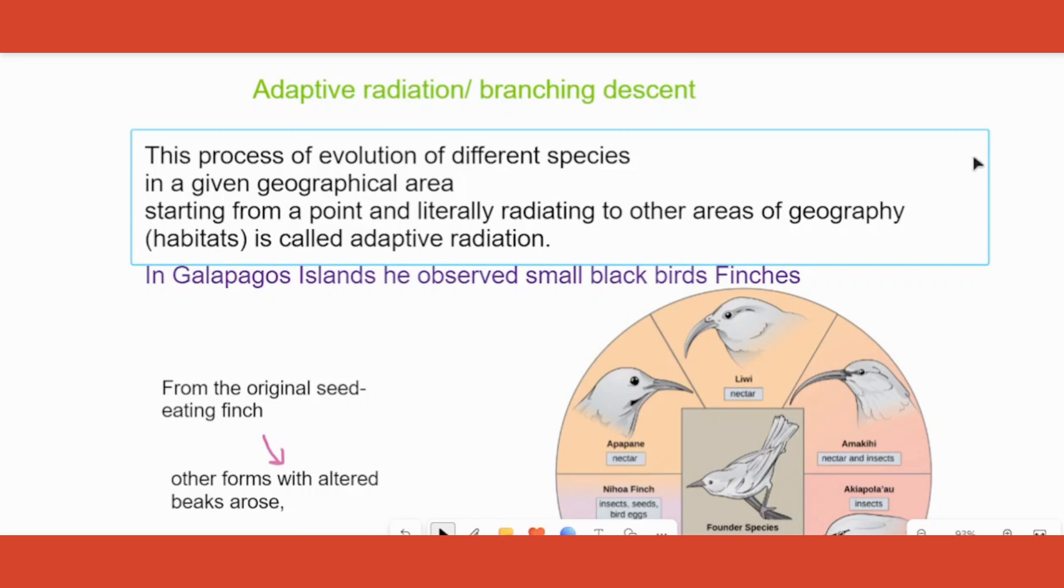key concepts: one is natural selection, another is branching descent otherwise called as adaptive radiation. So what exactly is this adaptive radiation? This concept is very important for your examination point of view.